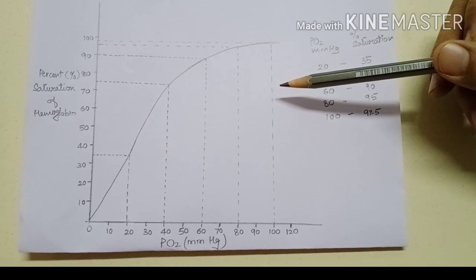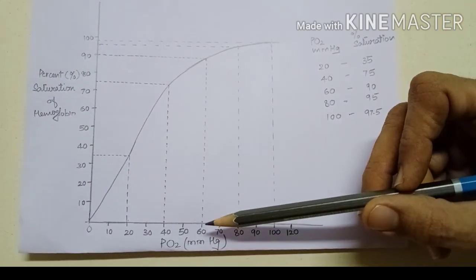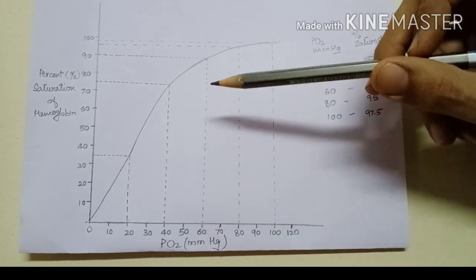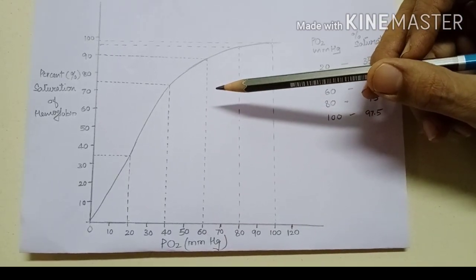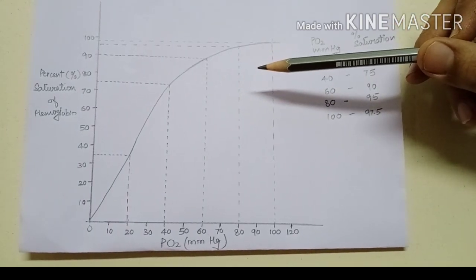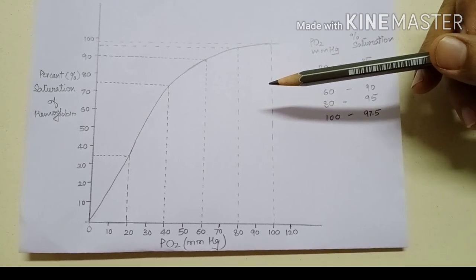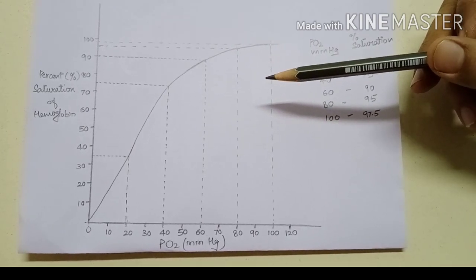When PO2 falls to 60 mmHg, hemoglobin saturation falls to 90%. Therefore, the loading zone or flat part gives a margin of safety.